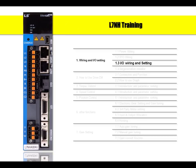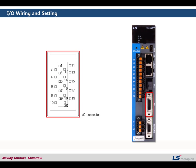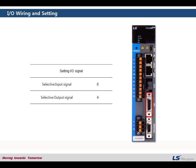Today we are going to learn about IO wiring and setting. This is the IO connector. In this connector there are 20 terminals. You can allocate input functions or output functions based on your preference. In case of input signal you can select 8 functions out of 15 functions. Regarding output signal you can select 4 functions out of 11 functions.